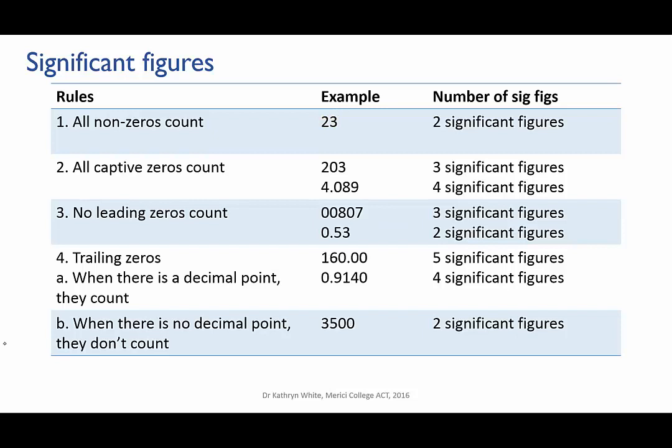Second, all captive zeros are significant. Captive means zeros that are between other non-zero digits. So in 203 and in 4.089, the zeros are captive. They're between non-zero digits. So both they and the non-zero digits count. Hence, 203 has three significant figures, and 4.089 has four significant figures.